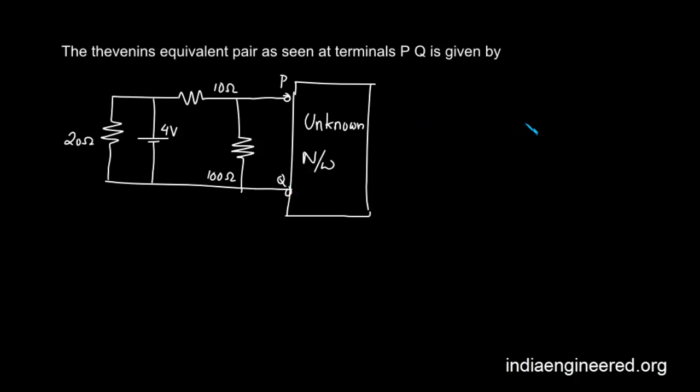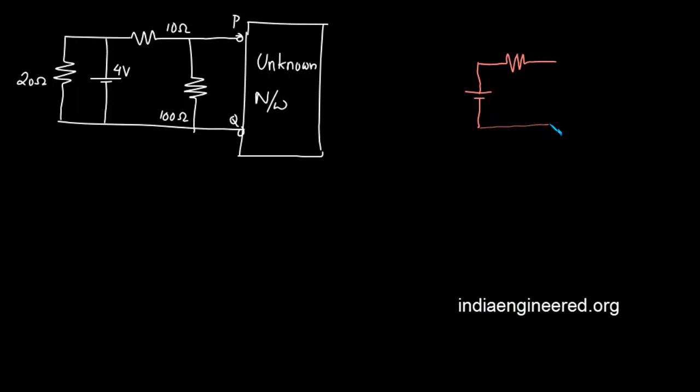What we have to do is replace this circuit by a Thevenin's voltage and the Thevenin's resistance followed by the network. We have to find out what is the Thevenin's resistance and what is the Thevenin's voltage.